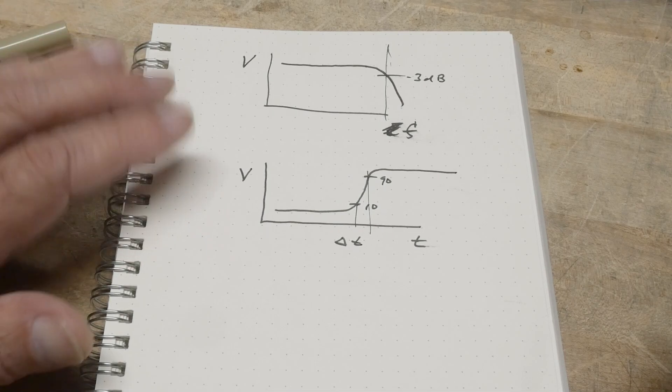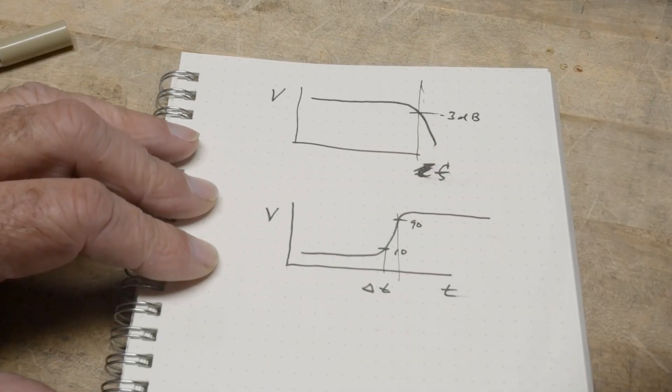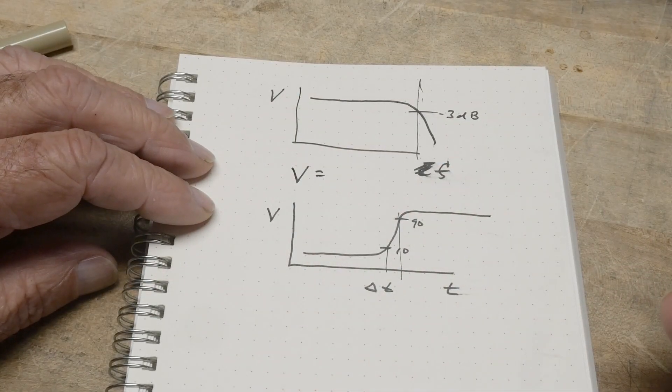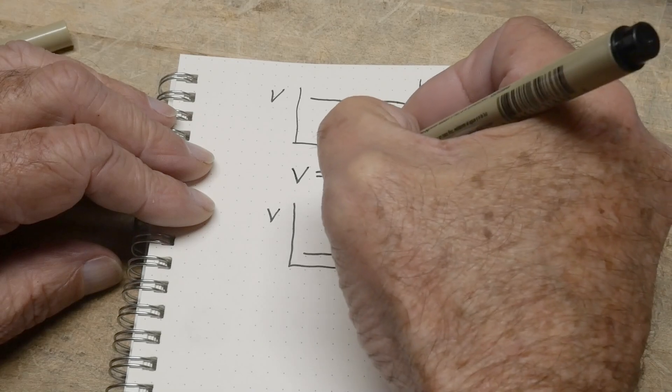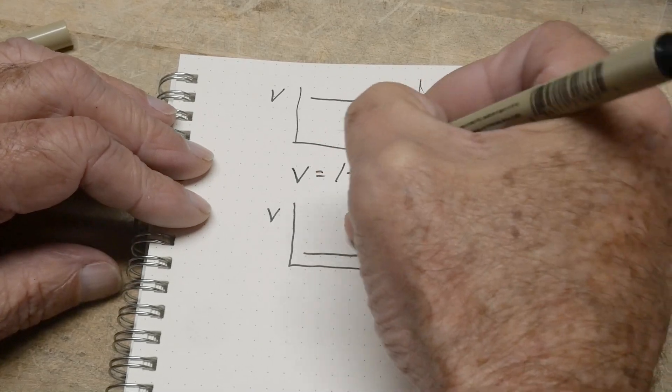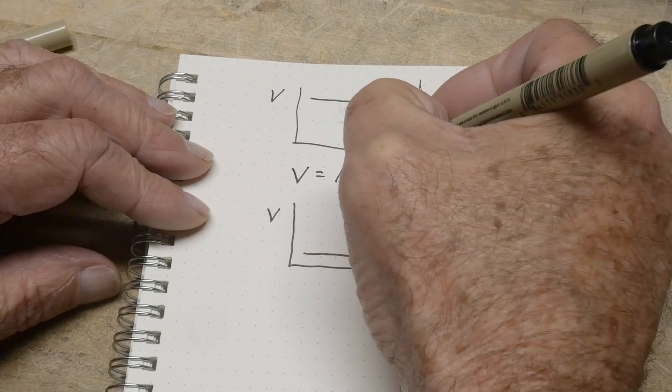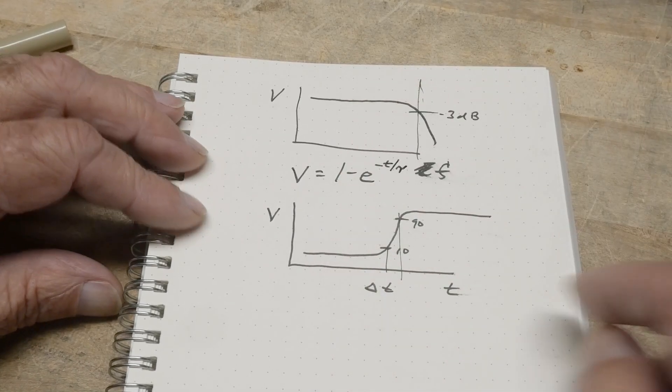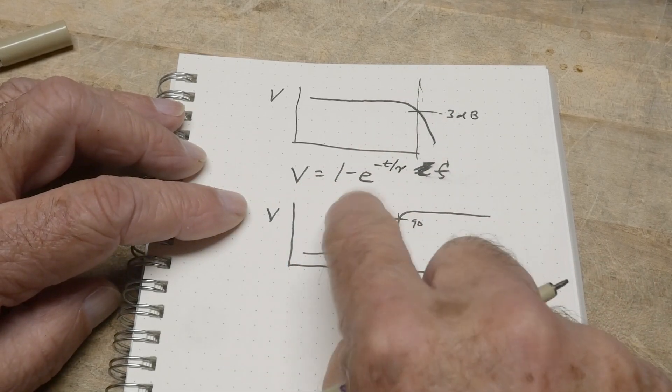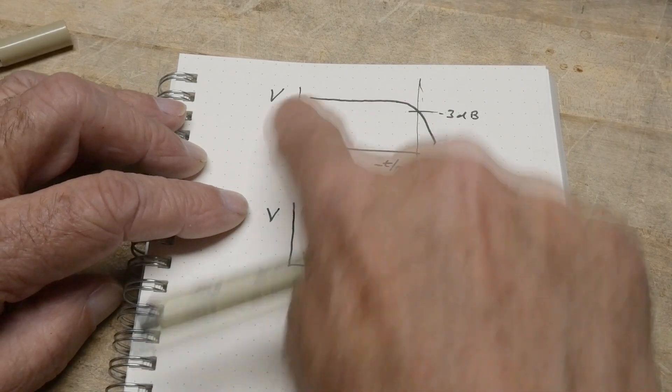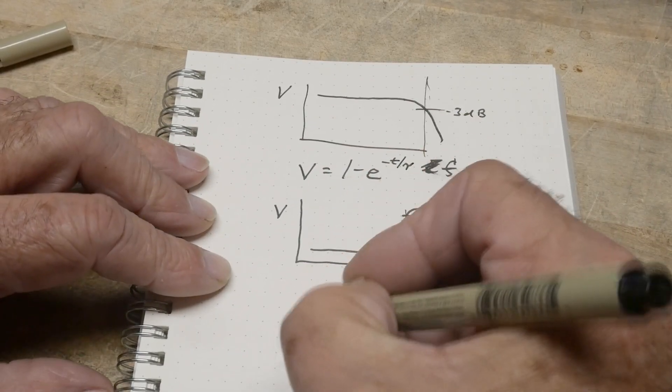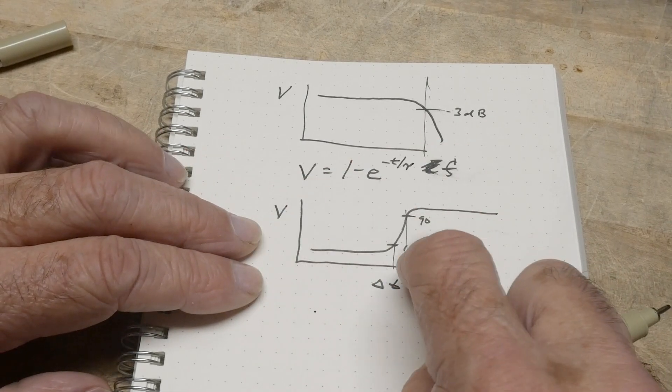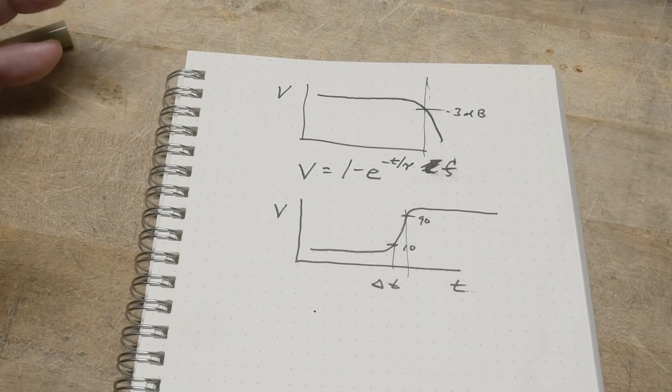Well, we can express this as an equation. We can say the volts here is equal to 1 minus e to the minus t over a funny number tau. Okay. So the voltage here is 1 minus e to this. So that's the roll off here. The voltage here is going to be that voltage minus that voltage.